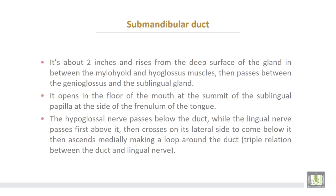The sub-mandibular duct is about two inches long and derives from the deep surface of the gland. It passes in between the mylohyoid and the hyoglossus muscle, then passes between the hyoglossus and the sub-lingual gland. It opens in the floor of the mouth at the summit of the sub-lingual papilla, at the side of the frenulum of the tongue. The hypoglossal nerve passes below the duct.